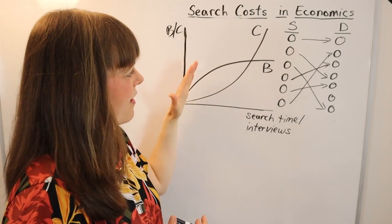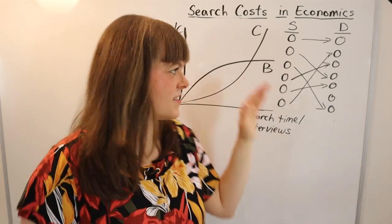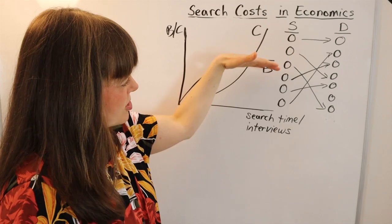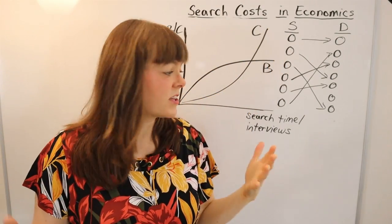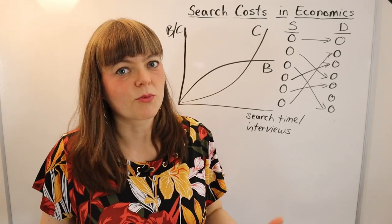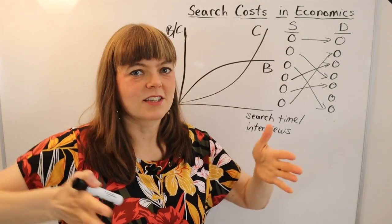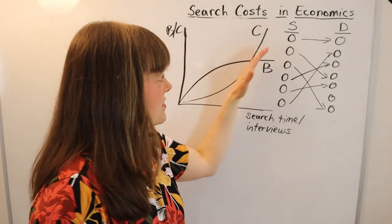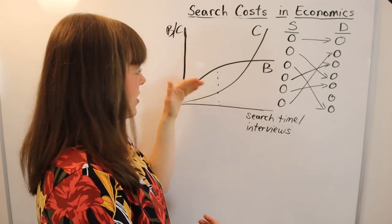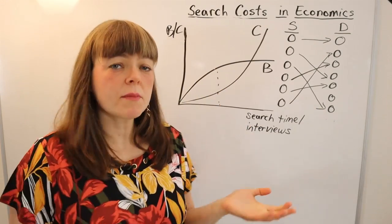The same logic applies further along — the chance that candidate seven is better than the best of the first six is less than the chance that candidate four is better than the best of the first three. So we have diminishing marginal benefit and increasing marginal cost, since keeping the search open longer raises opportunity costs at an increasing rate. Search theory says you search until marginal benefit equals marginal cost, which maximizes value.